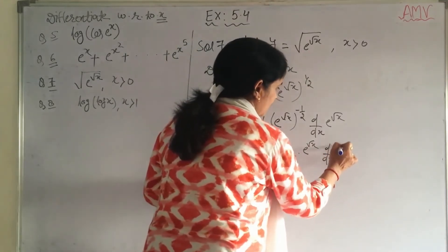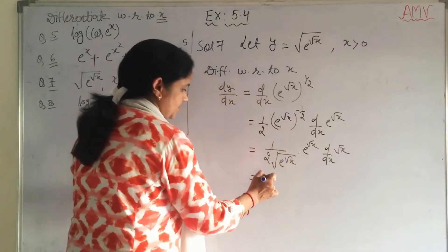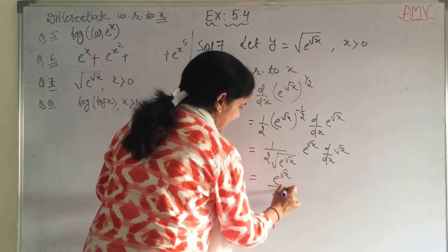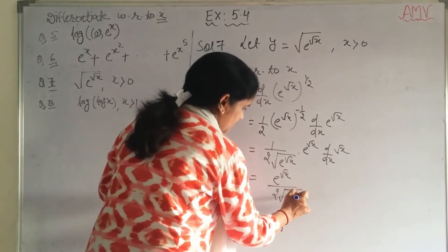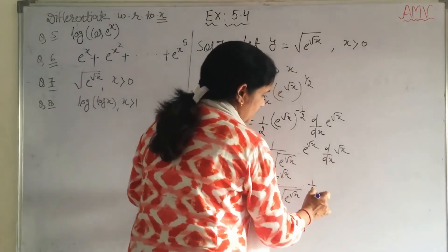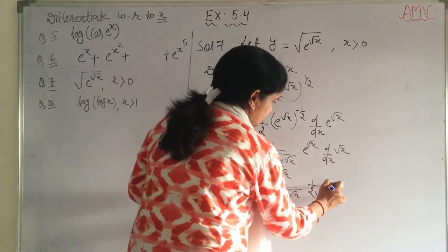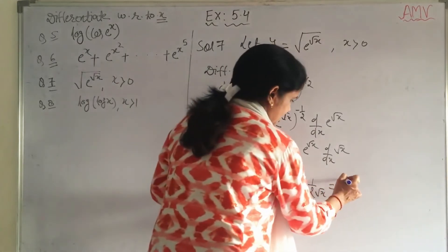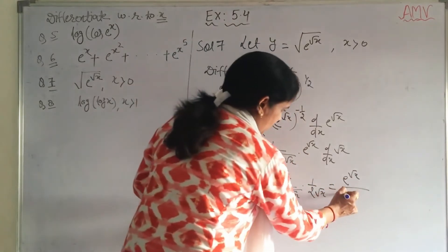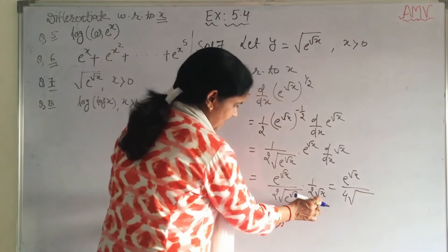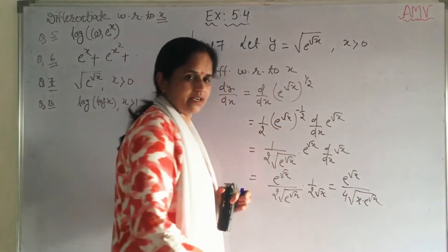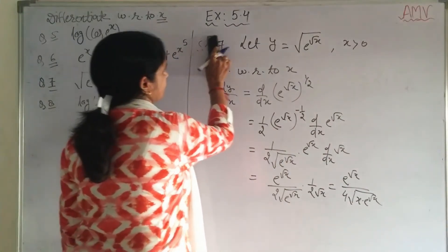Derivative of √x is 1/(2√x). So it is e^(√x) / 2, under the root e^(√x). The final answer is e^(√x) / (4√x · √(e^(√x))), which simplifies to e^(√x) / (4√x · e^(√x/2)). That is the answer.